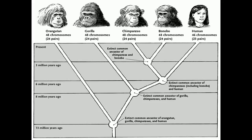If you ever get a branching diagram in the exam, understand that where the branches meet is where there would have been a common ancestor. To recognize the timeline, you look at the time across: humans and chimpanzees had a common ancestor roughly five to six million years ago, and this common ancestor is now extinct. The common ancestor of gorillas, chimpanzees, and humans is roughly eight million years ago, and if we include orangutans as well, that's thirteen million years ago. Where branches meet is where there was a common ancestor, and this common ancestor would be extinct.